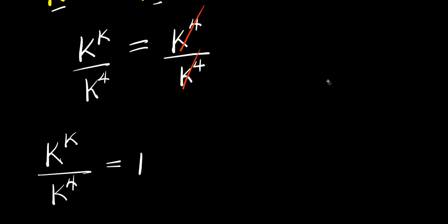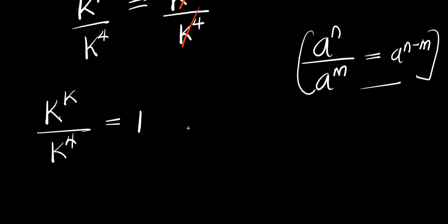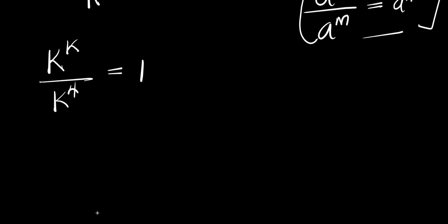Now, if you have a^n divided by a^m, that equals a^(n minus m). Applying this rule here, I'll have k^(k minus 4) equals 1.